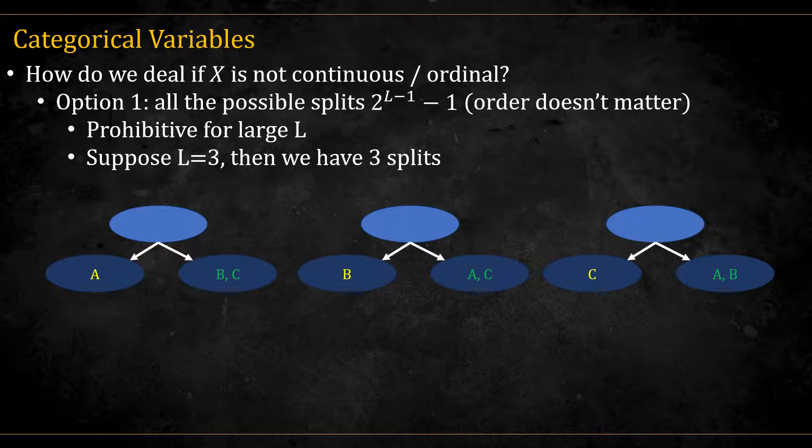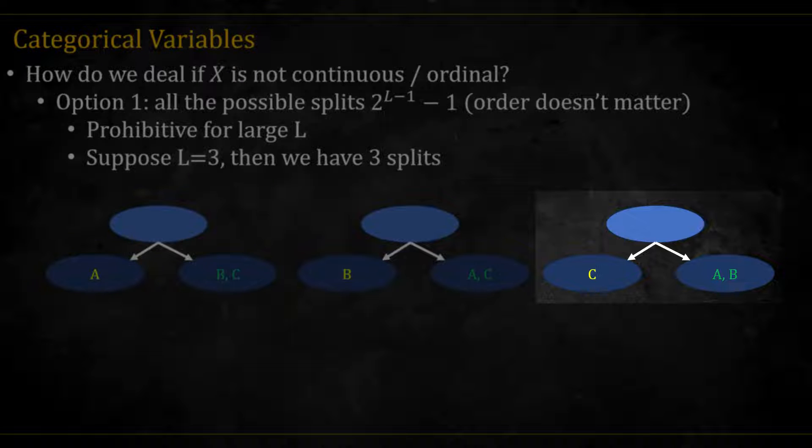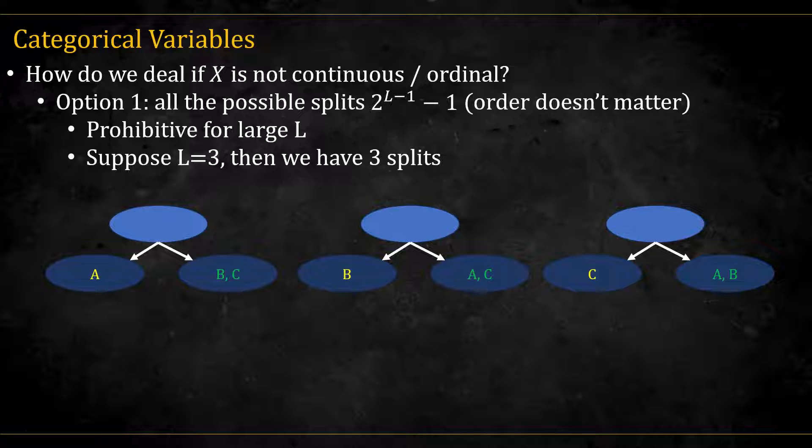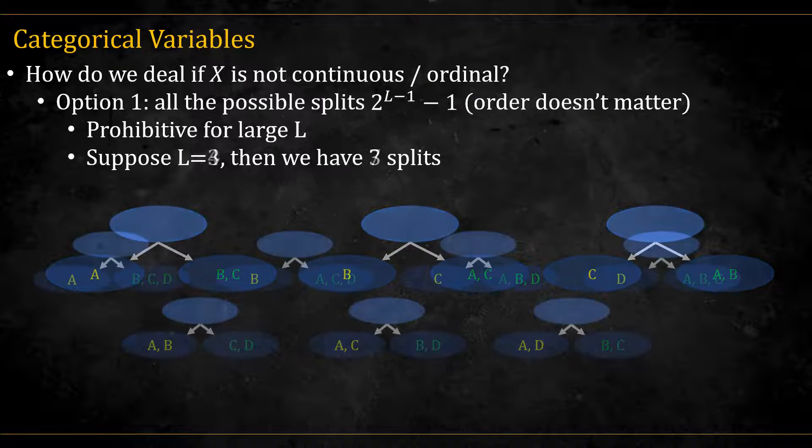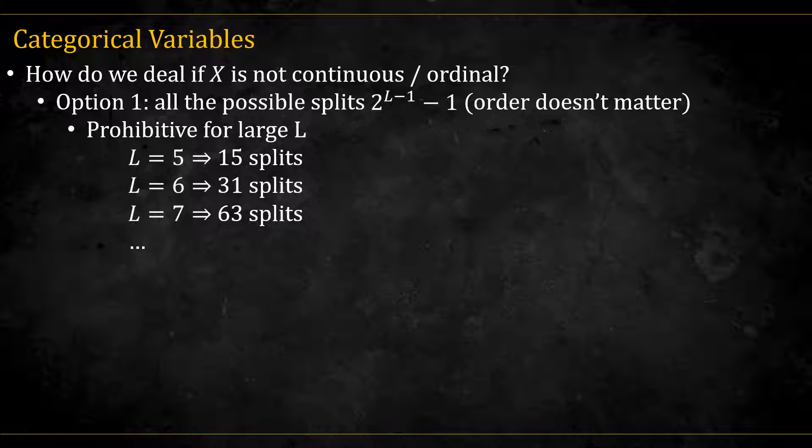Let's move to categorical variables. What do we do if we have a feature that is not continuous, or at least ordinal? The first option is to look at all possible splits. If our x categorical variable has three classes, then we have three possible splits. Either a goes to one side and the rest to the other, b goes to one side, or c goes to one side. Notice that the left-right order doesn't matter. So we will have overall 2 to the power of l minus 1, minus 1 splits. For l equal 4, we have 7 splits. In addition to the singular splits, we also have the ability to split by sending two classes to one side and the other two to the other side. Again, left-right order doesn't matter. This option is a bit prohibitive for large l. As l grows, we have more and more splits to consider, so it's not very practical for categorical data with a lot of categories.